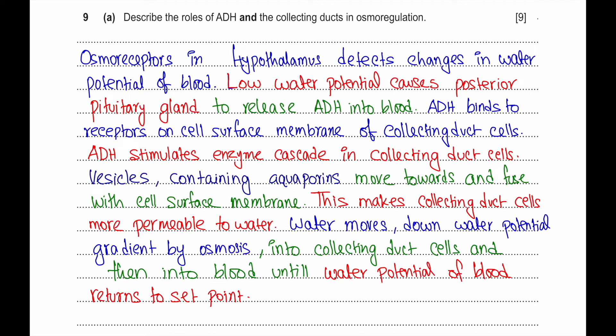Question 9a: Describe the role of ADH and the collecting ducts in osmoregulation. Osmoreceptors are located in the hypothalamus. Osmoreceptors have the ability to detect changes in water potential of the blood. Low water potential will cause the posterior pituitary gland to release a hormone called ADH into the blood.